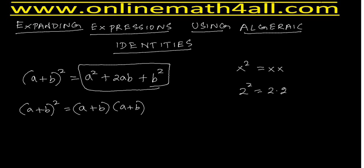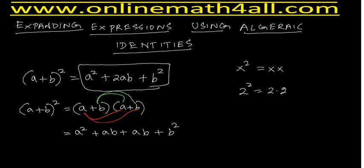Now I am going to multiply: a times a, then a times b — that is the first step. The second step: b times a, then b times b. When you multiply a by a, it becomes a²; a times b becomes ab. Then b times a becomes ba, which can be written as ab, and b times b becomes b². So ab + ab — they are like terms, we combine them — giving us a² + 2ab + b².